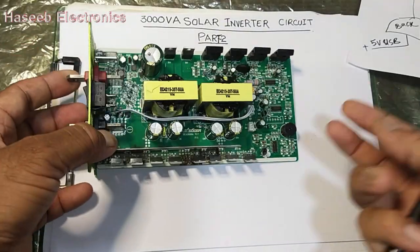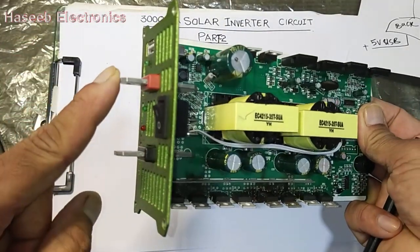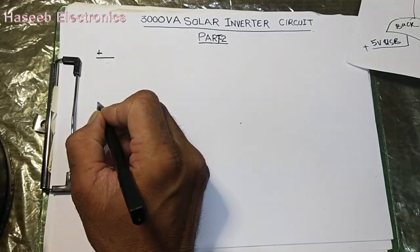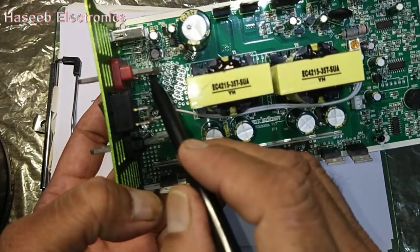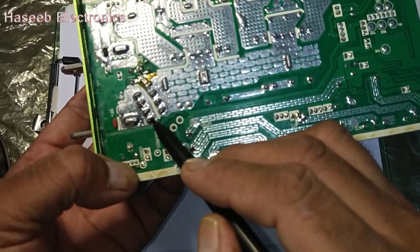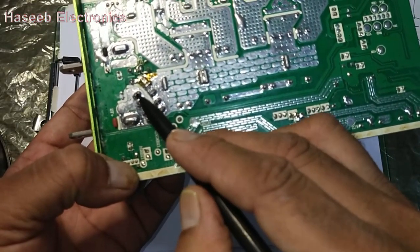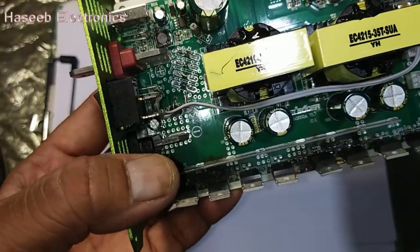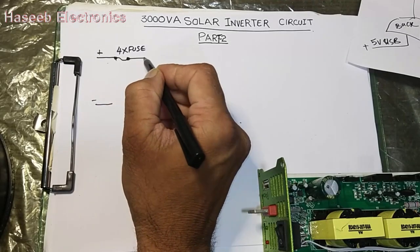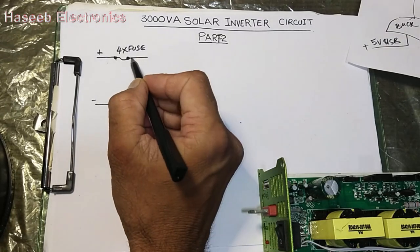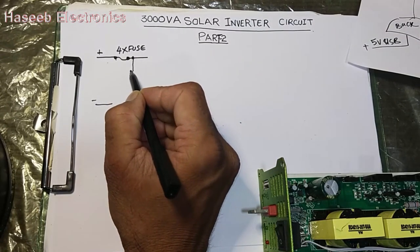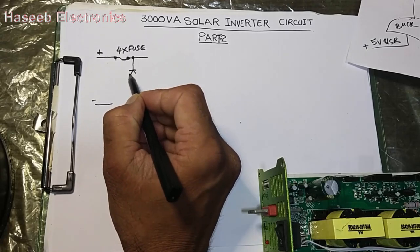So let's start. Here we have positive and negative terminals. Positive is reaching to the fuse — there are four fuses in parallel. Then we have a protection diode for reverse polarity protection.